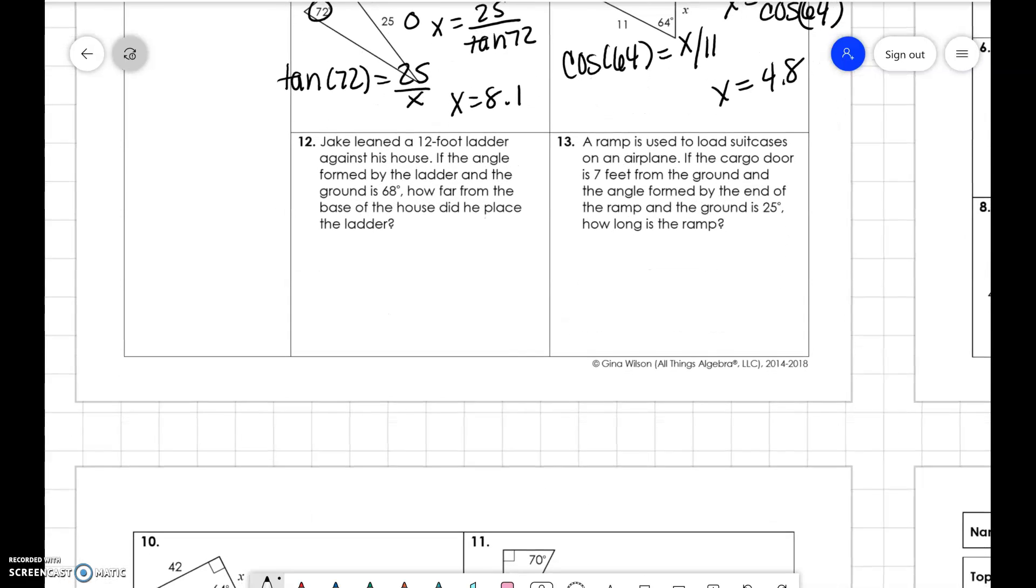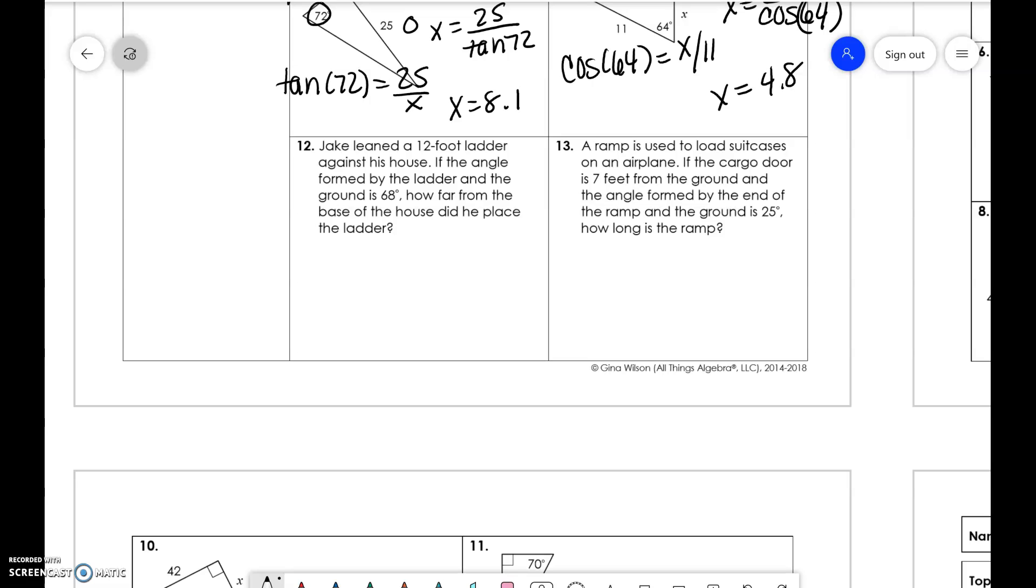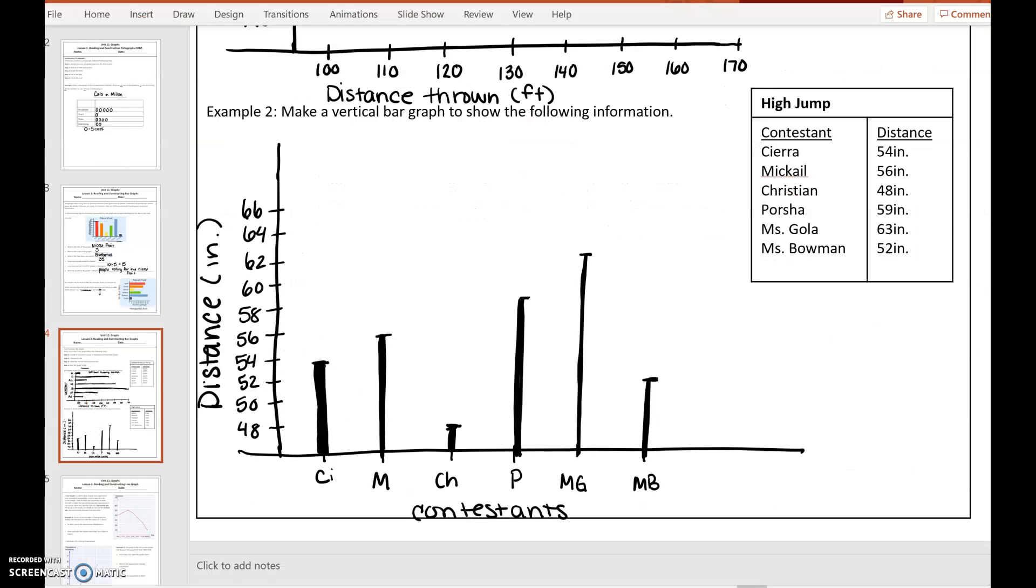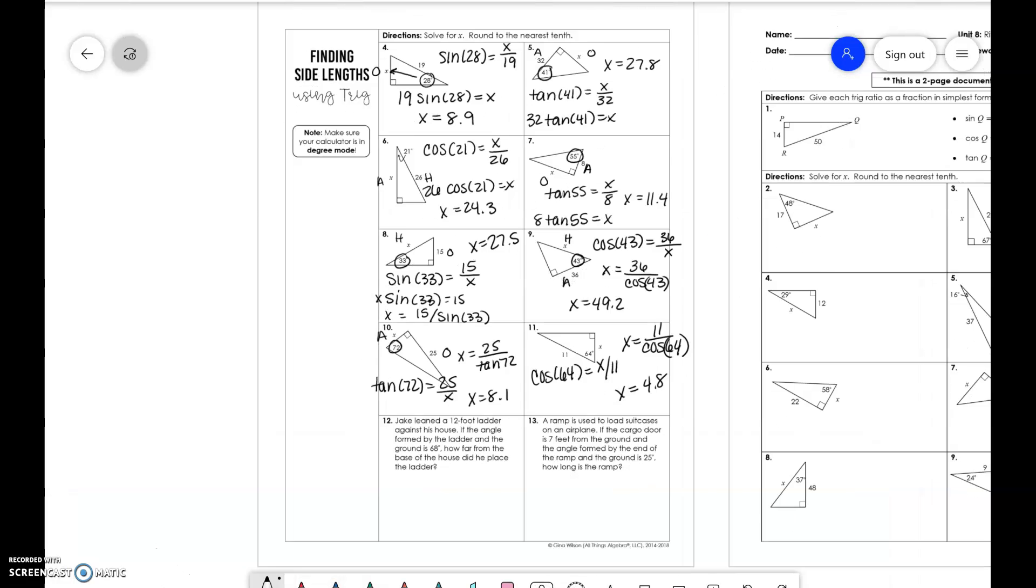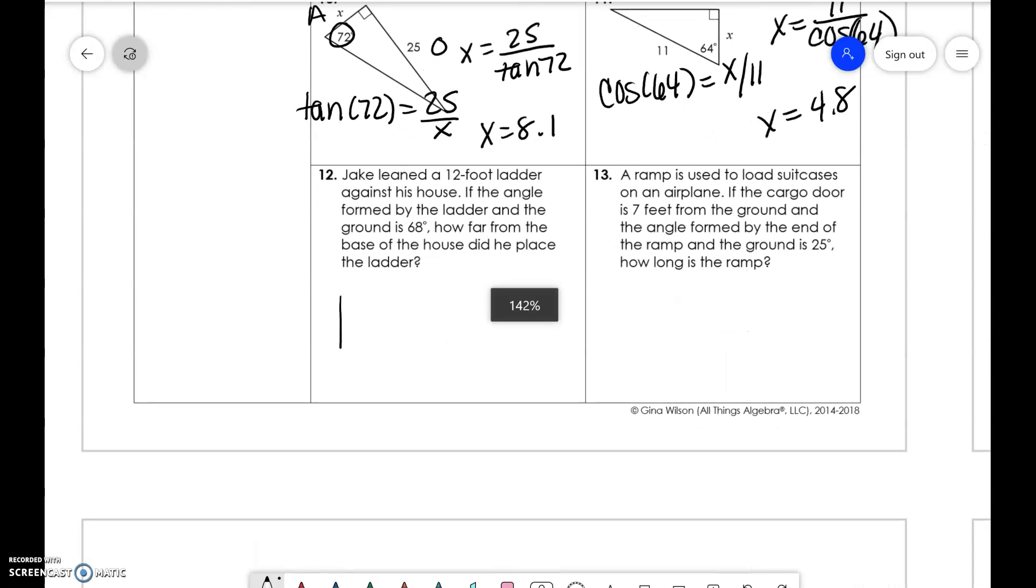Now we're going to take our word problems that we've been doing and we're going to solve them. Jake leaned a 12-foot ladder against a house. If the angle formed by the ladder and the ground is 68 degrees, how far from the base of the house did he place it? So here is our angle. We have adjacent and hypotenuse. So we're going to do cosine of 68 is equal to x over 12. So 12 cosine of 68 is equal to x. And x is 4.5.